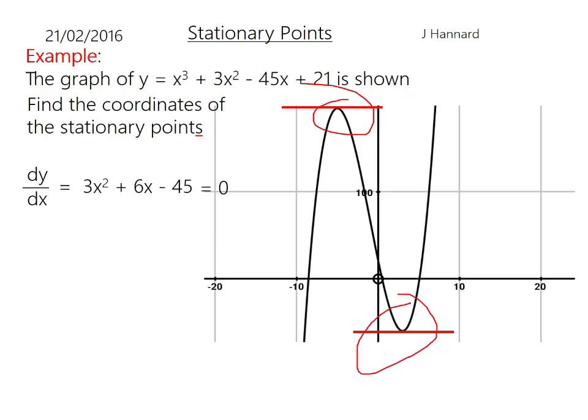So we're tackling it the same way. We do dy/dx: 3x squared plus 6x minus 45, and we'll set it equal to zero. I'm seeing a common factor of 3 there, so I would probably divide everything by 3. So x squared plus 2x minus 15 equals 0.